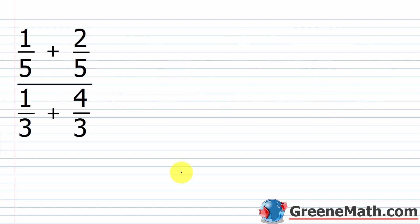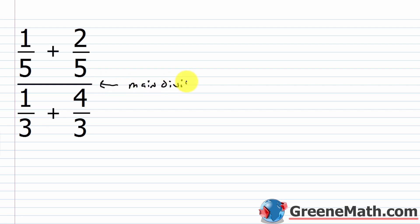Let's start out by looking at a problem. Here's a complex fraction: we have 1/5 plus 2/5 over 1/3 plus 4/3. Notice how we have an operation in both the numerator and the denominator, and there are fractions in both. One way you can simplify this is to simplify the numerator and the denominator separately, and then you're going to have a main division — this is going to be your main division for the complex fraction.